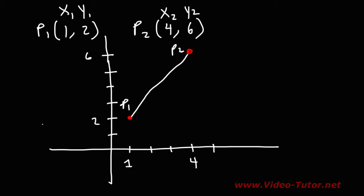And what we can do is we can form a right triangle. So in order to go from P1 to this point, we need to travel three units to the right. And in order to go this direction to get to P2, we need to travel from 2 to 6 or 4 units up.